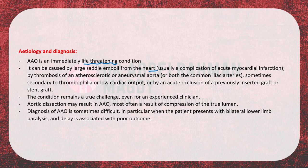It can also occur secondary to thrombophilia or low cardiac output, and when caused by these etiologies it carries a very high mortality. Acute occlusion of a previously inserted graft or stent graft — if the patient has undergone EVAR before — is another cause. The condition remains a true challenge even for experienced clinicians. Aortic dissection may also result in acute aortic occlusion, most often as a result of compression of the true lumen.